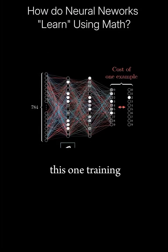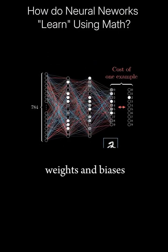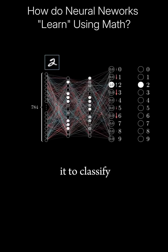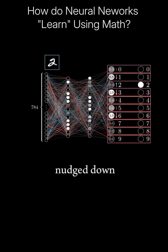What effect should this one training example have on how the weights and biases get adjusted? Since we want it to classify the image as a 2, we want that third value to get nudged up, while all of the others get nudged down.